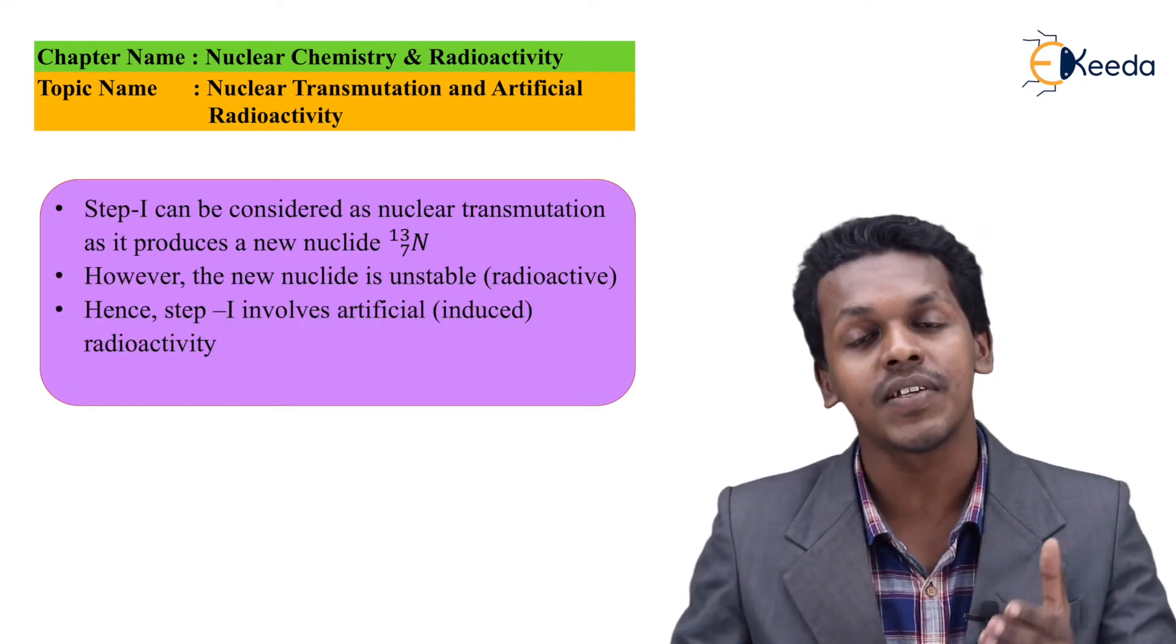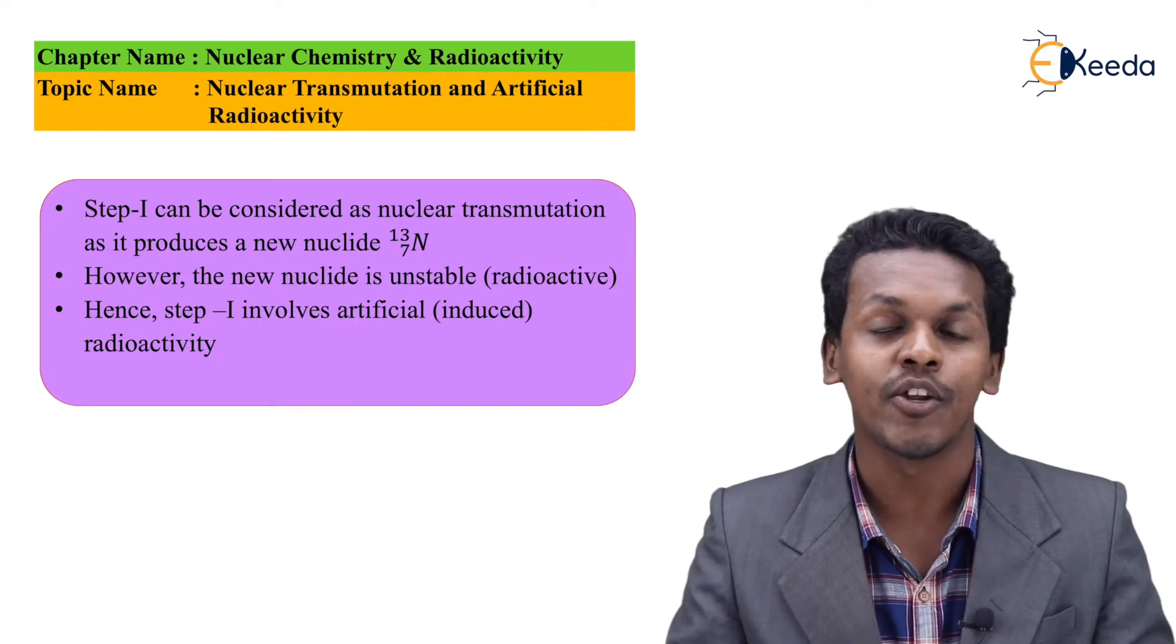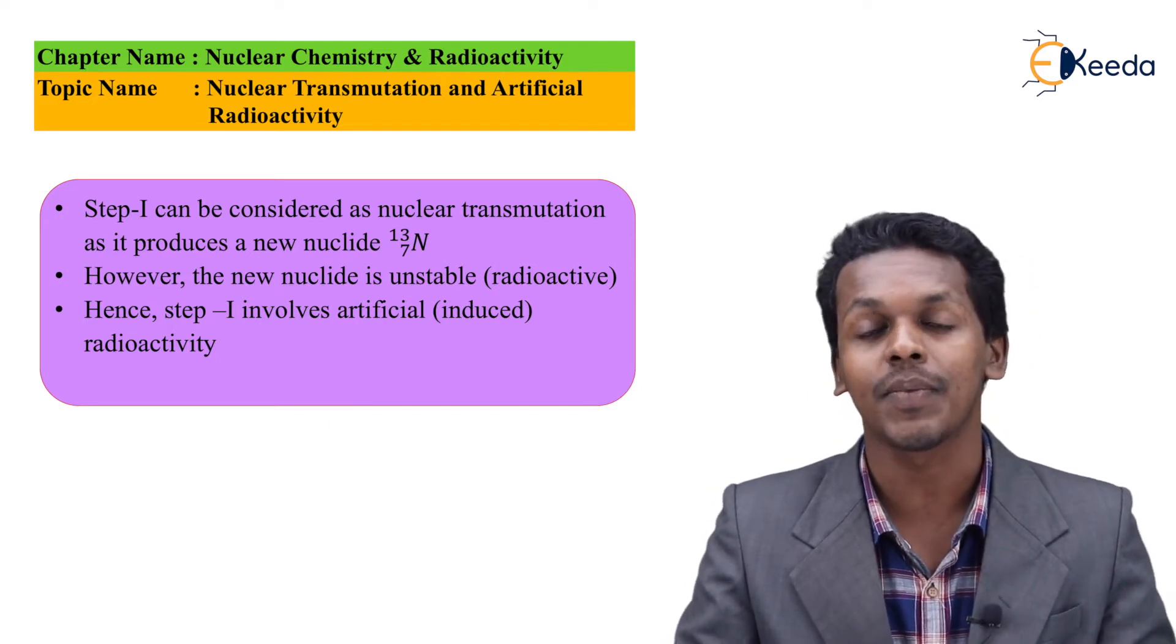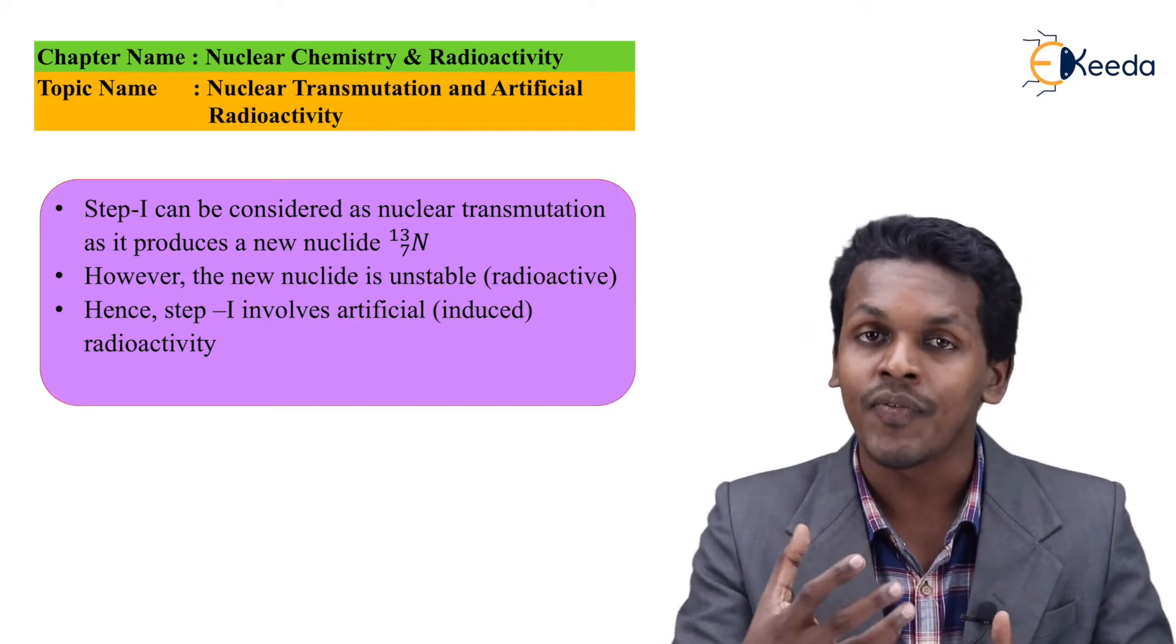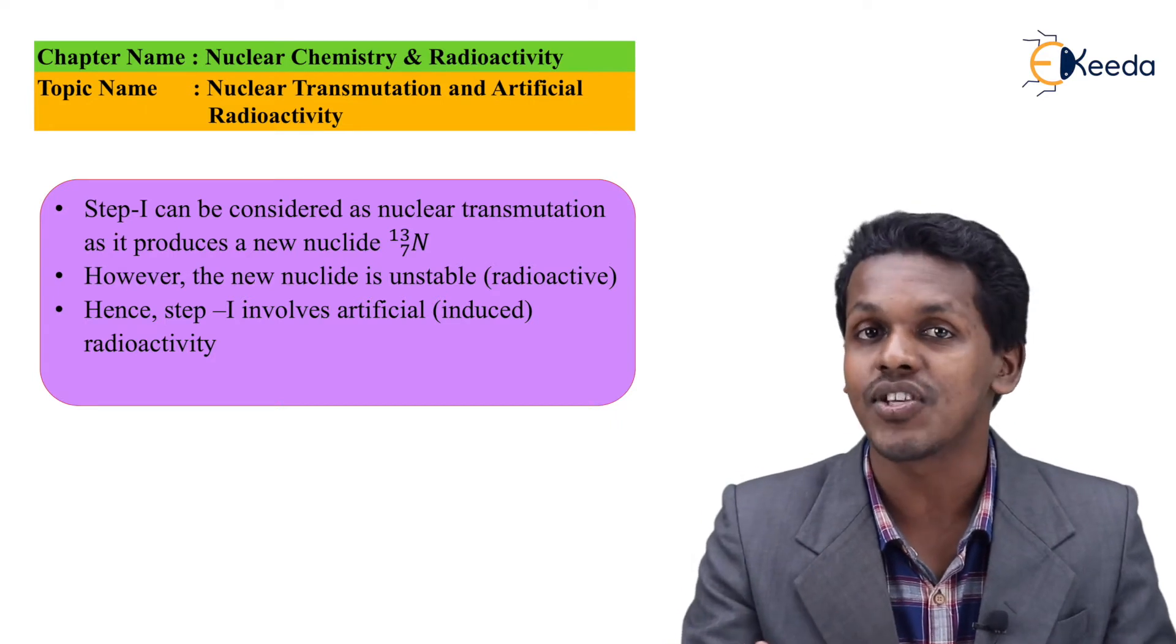The first step is nuclear transmutation while the second step is artificial radioactivity.